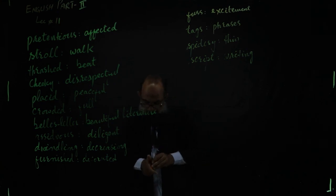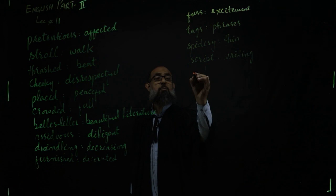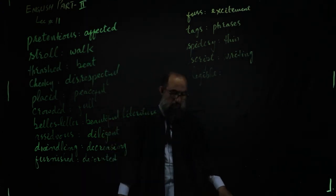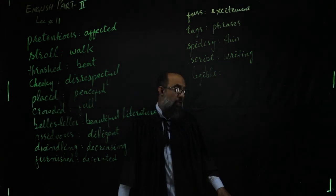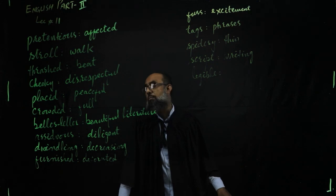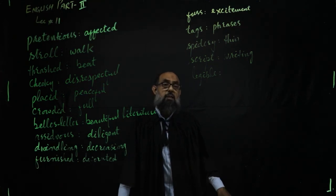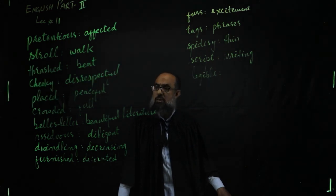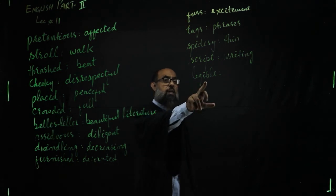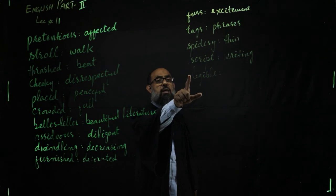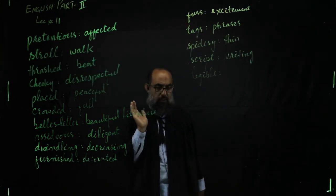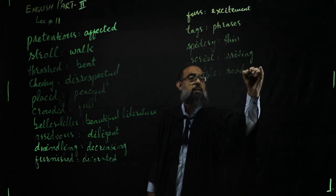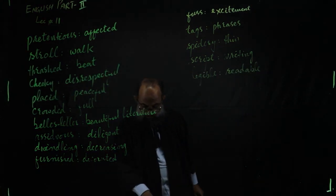اسی expression میں لفظ آیا legible، l-e-g-i-b-l-e، جو پڑھی جا سکے۔ Pair of words میں eligible اور illegible کا ذکر ہے — eligible کا مطلب اہل، قابل ہوتا ہے۔ Illegible، i-l-e-g-i-b-l-e، جو پڑھا نہ جا سکے۔ Legible کا صحیح synonym readable ہے۔